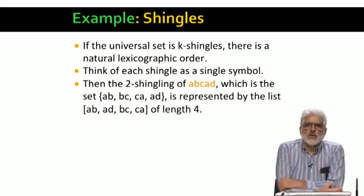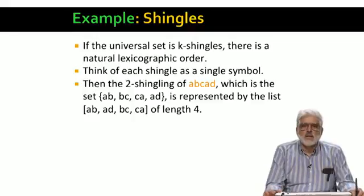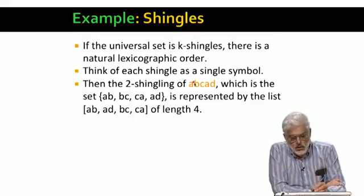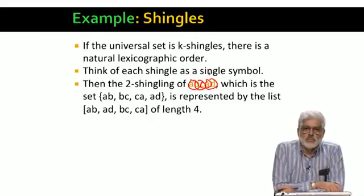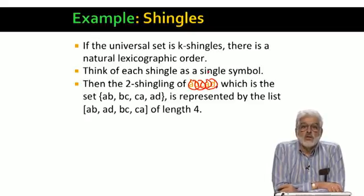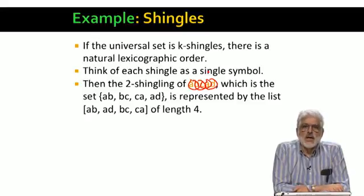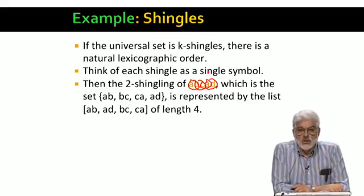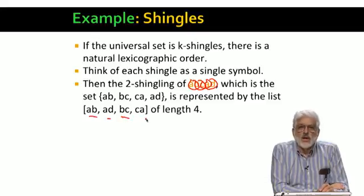So let's take a particular example. We'll use k equals 2, and the document we shingle will be a, b, c, a, d. The four shingles in this document are ab, bc, ca, and ad. Let's sort these shingles lexicographically. First is ab, then comes ad. Finally, bc, and then ca. The sorted list of shingles is thus ab, ad, bc, and ca.